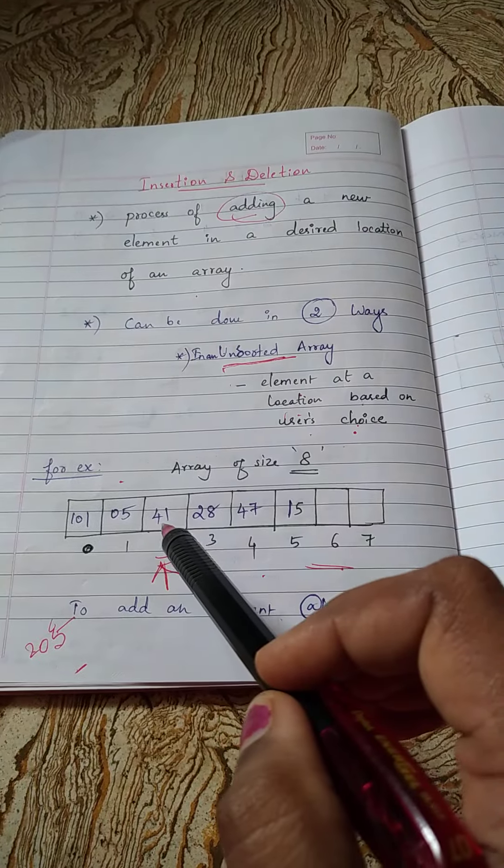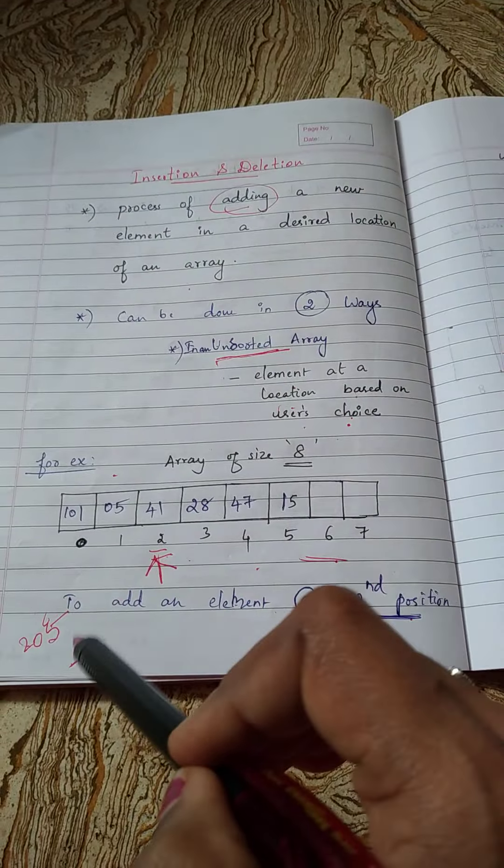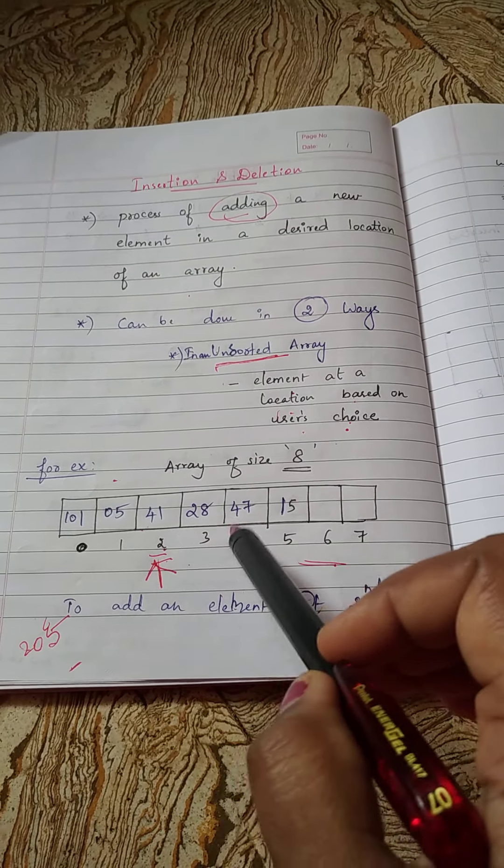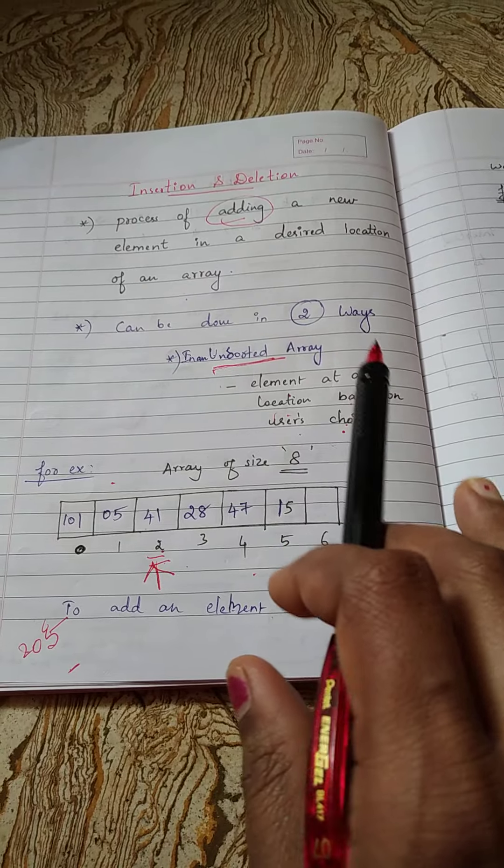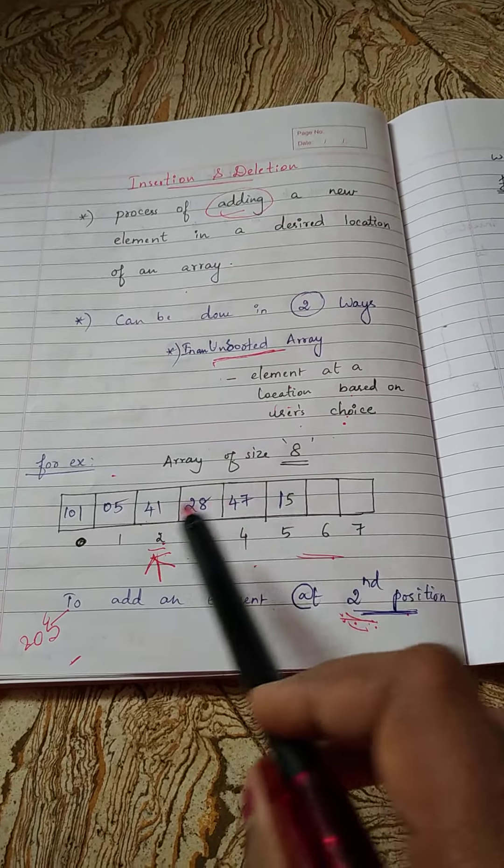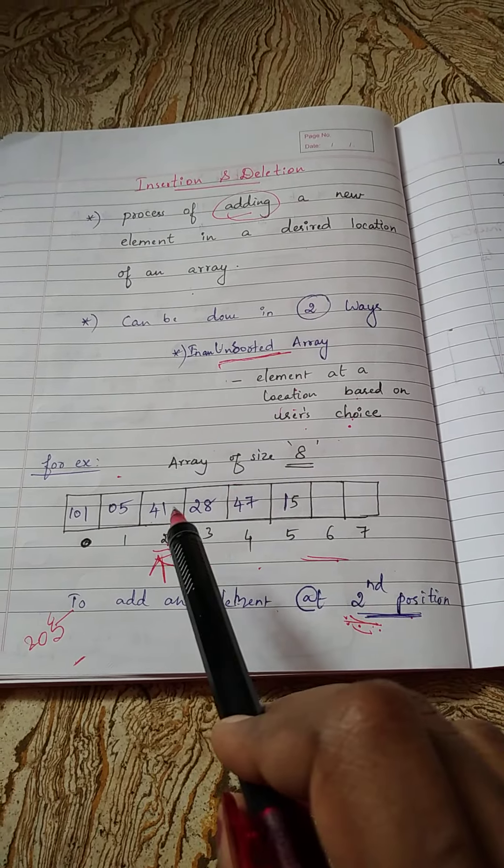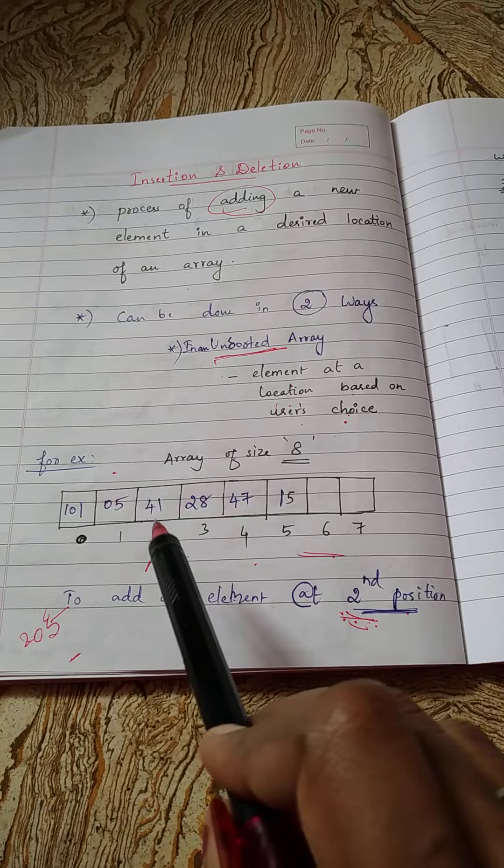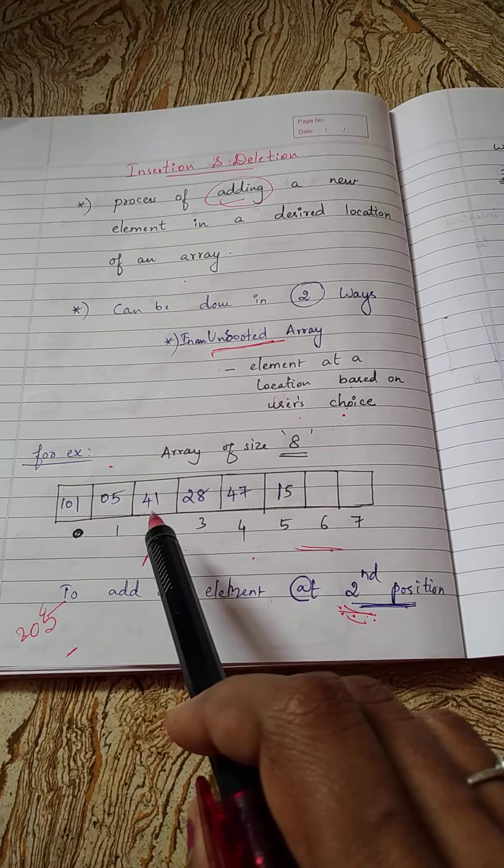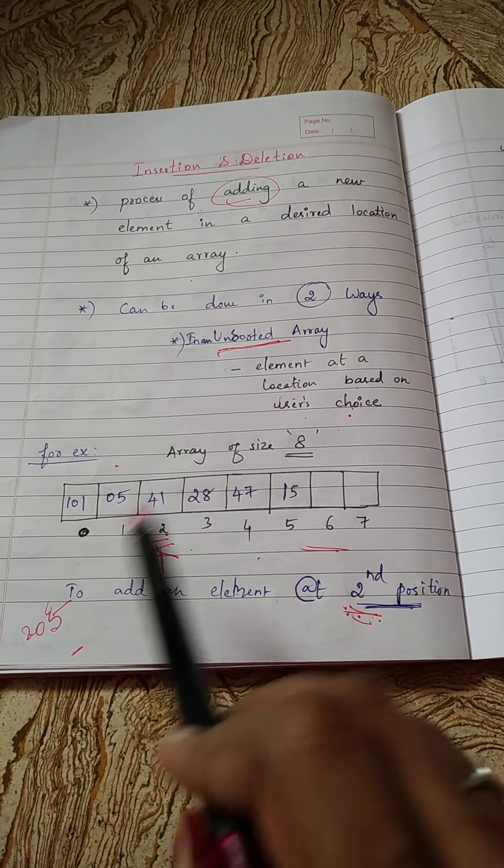But this is not my wish. I want to insert a new element in position 205, and I need all these elements to be present in this array itself. So what I have to do: I have to simply shift the elements, shift the elements one position forward. So that this second position will be empty and after shifting forward, I can insert the new element 205.